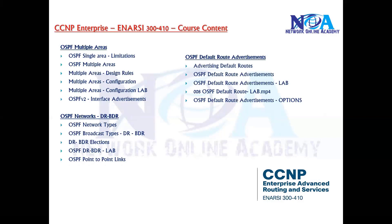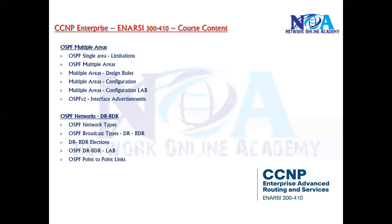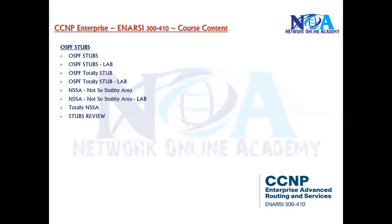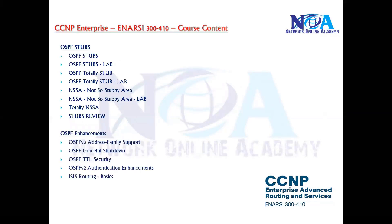Default routes are required especially when connecting your corporate network to the internet, allowing unknown traffic to go over the internet and enabling all branch offices to access the internet from a single location. Then we get into advanced OSPF options like virtual links, LSA types, and the STUBS concept. STUBS is very important for optimizing OSPF when you have hundreds of routers with large routing tables. There are four different types of STUBS covered in this section.